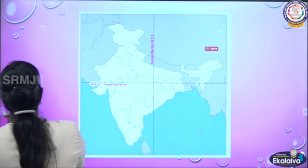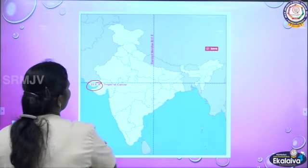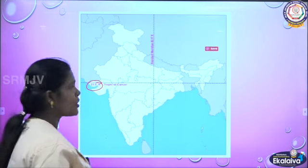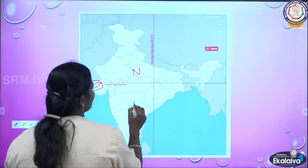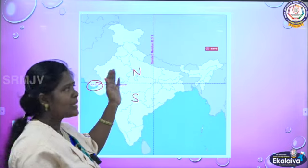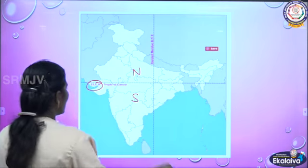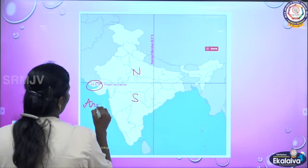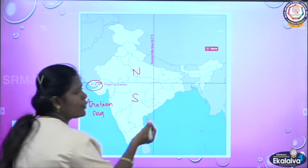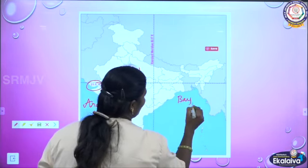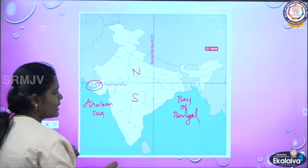The Tropic of Cancer runs at 23°30' N and divides India into two halves: Northern India and Southern India. The northern part of India is surrounded by land, while the southern part is surrounded by water — the Arabian Sea to the west, the Bay of Bengal to the east, and the Indian Ocean to the south.